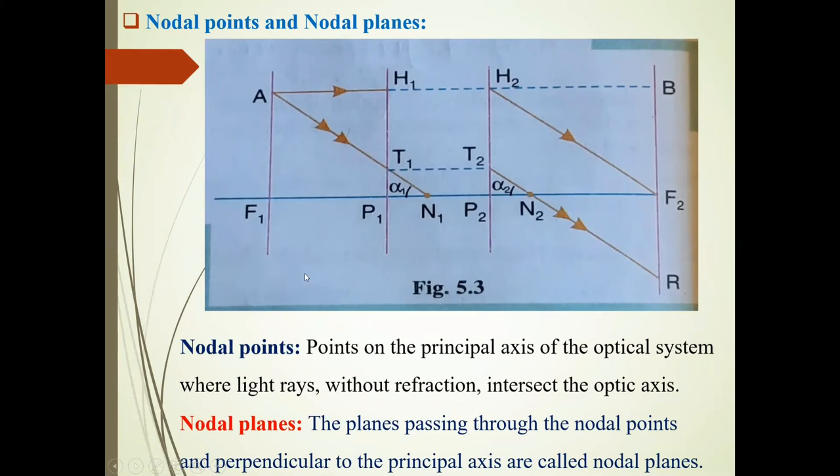Principal points coincide with nodal points when the optical system is situated in the same medium. Suppose the medium is air, then principal point coincides with nodal point. So P1 point will coincide with N1 point and P2 point will coincide with N2 point.